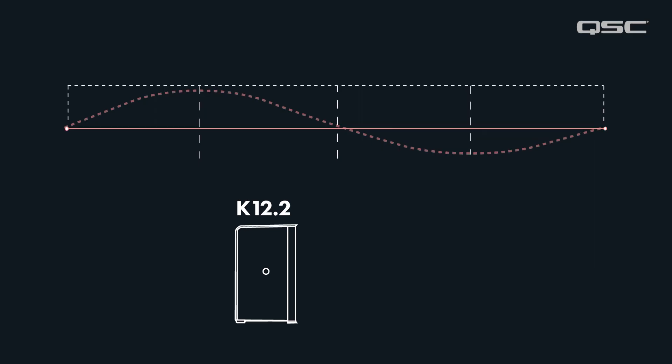So how far back should your PA system be to avoid these cancellations? To figure this out, take the lowest frequency in your loudspeaker's range and calculate the quarter wavelength distance of that frequency. As an example, the K12.2 extends down to 45 Hz. The quarter wavelength of 45 Hz is 1.9 meters or 6.25 feet.